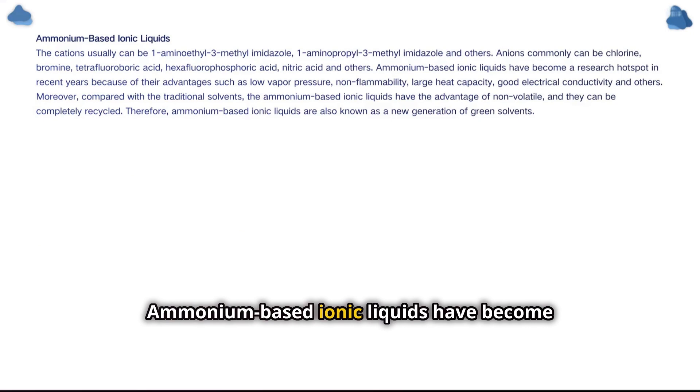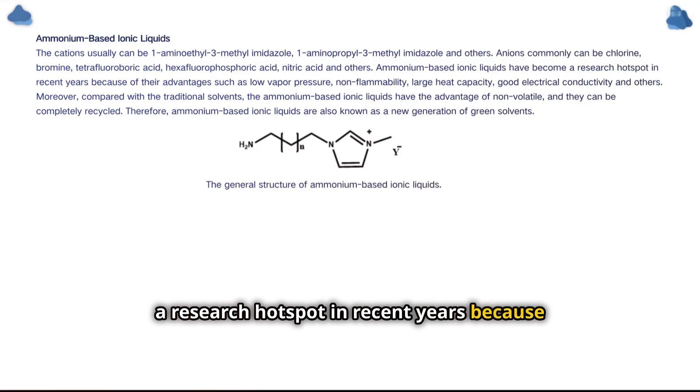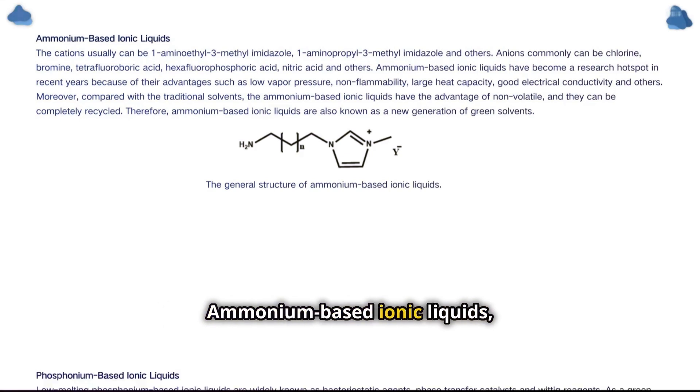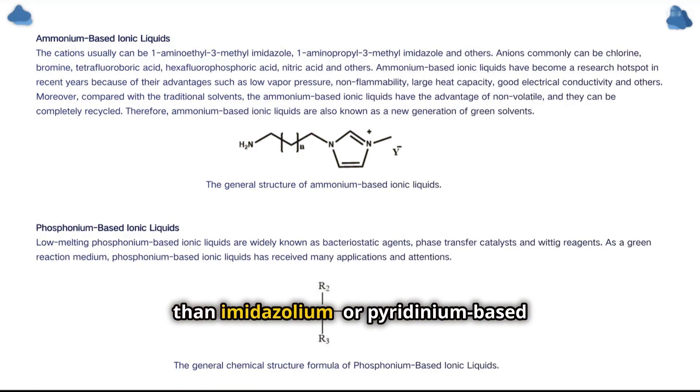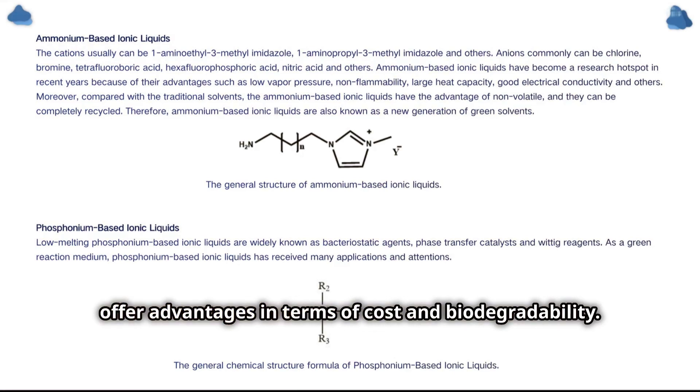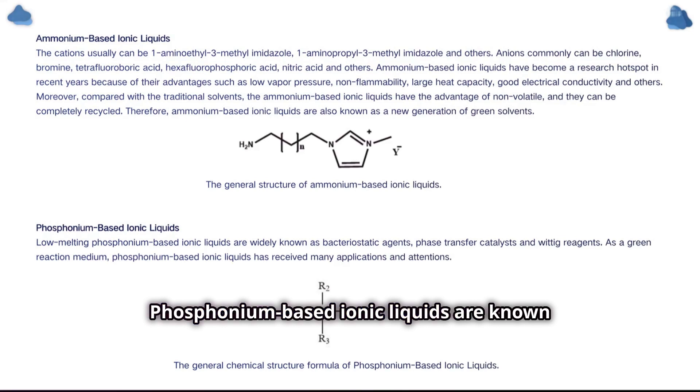Ammonium-based ionic liquids have become a research hotspot in recent years because of their advantages such as low vapor pressure, non-flammability, large heat capacity, good electrical conductivity, and others. Ammonium-based ionic liquids, while generally less thermally stable than imidazolium or pyridinium-based ionic liquids, offer advantages in terms of cost and biodegradability. Phosphonium-based ionic liquids are known for their high thermal and chemical stability, making them suitable for use in harsh conditions.